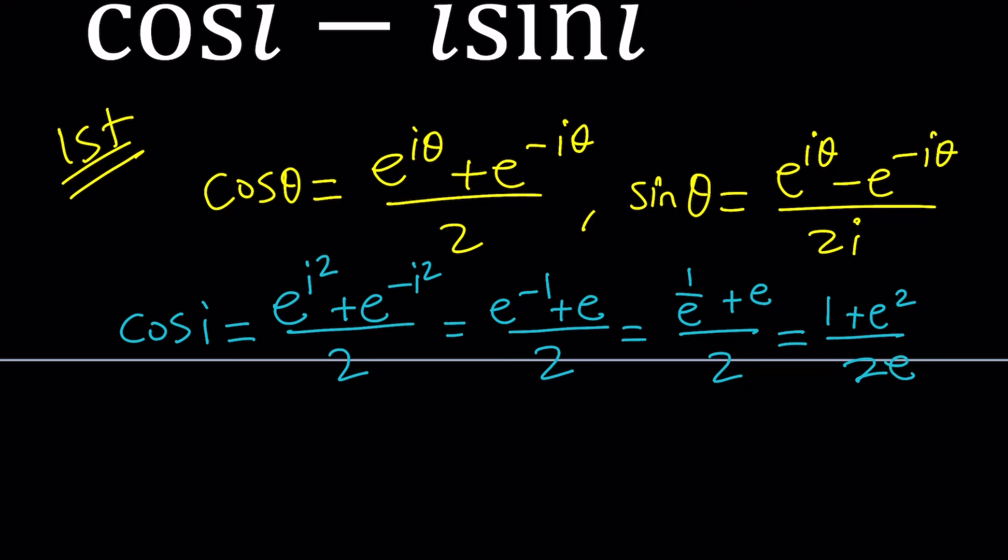So that would be cosine of i. Actually, I should put a plus sign. Sorry about that, because it's supposed to be a plus sign. So it'll be 1 plus e squared divided by 2e. It's fixed now. Don't worry about it. Don't panic. It's all good. So this is cosine i.